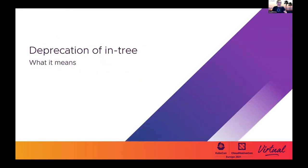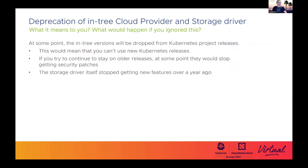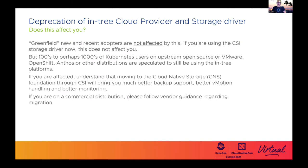We'll start with coverage of deprecation of in-tree, both cloud provider and storage driver, and what it means. The expected release frame for the in-tree removal is Kubernetes 1.24. If you deployed Kubernetes on vSphere recently, you probably used the out-of-tree provider and the CSI storage driver.